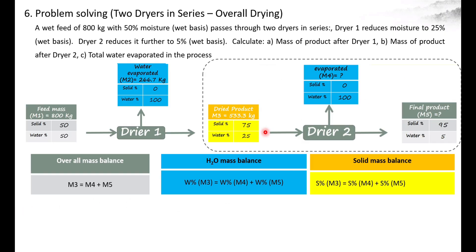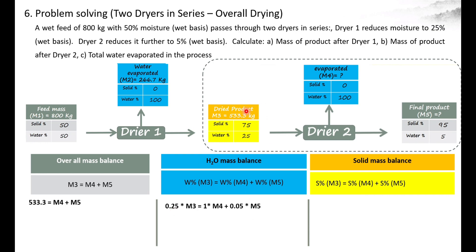For Dryer 2, the inlet stream is M3 and the output streams are M4 and M5, so M3 equals M4 plus M5. We multiply each stream by its water percentage for the water balance, and by its solid percentage for the solid balance. M3 is 533.3 kg. Water percentages: M3 stream is 0.25, M4 stream is 1.0 (100%), and M5 stream is 0.05 (5%). Solid percentages: M3 is 0.75, M4 is 0, and M5 is 0.95.